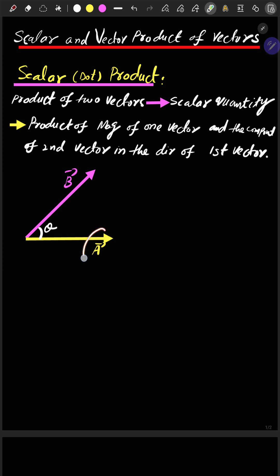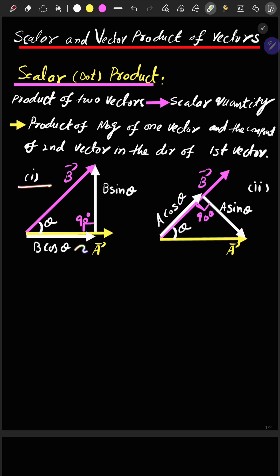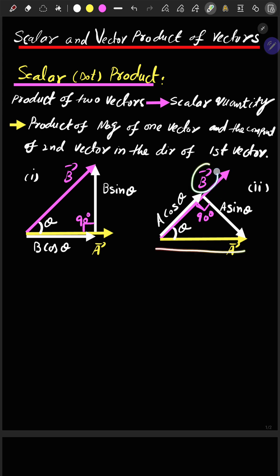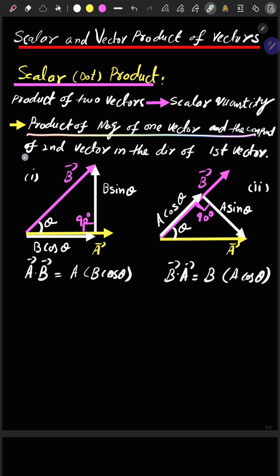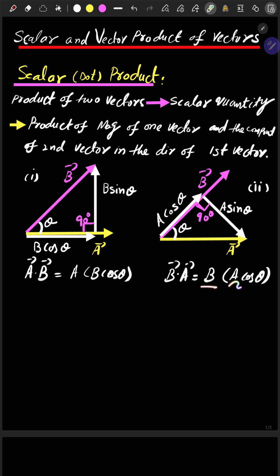If we consider these two as the corresponding vectors having an angle theta between them, in the first figure if we resolve B with respect to A we get B cos theta — the component of B in the direction of A. In the second case, if we resolve A with respect to B, we get A cos theta — the component of A along B. So A dot B equals A times B cos theta, and B dot A equals B times A cos theta.